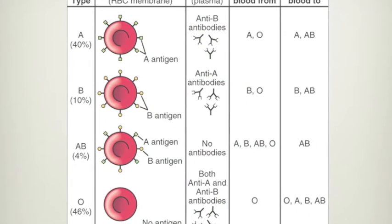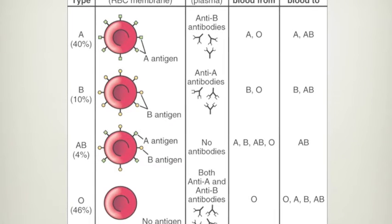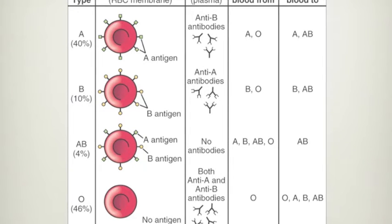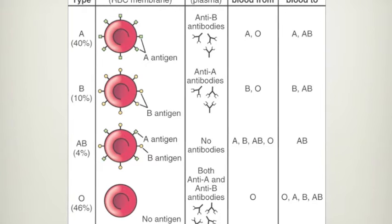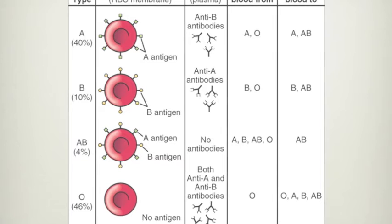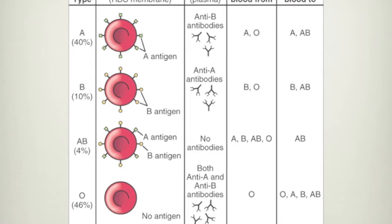As you can see here, the A blood type has A antigens and produces anti-B antibodies. The B blood type has B antigens and creates anti-A antibodies. AB blood has no antibodies but has both A and B antigens. And type O blood has no antigens and creates both anti-A and anti-B antibodies.